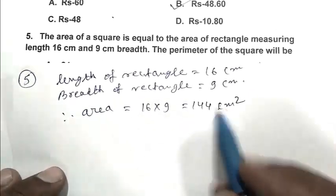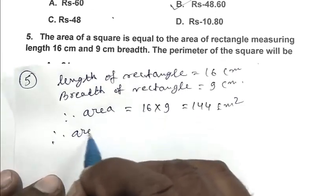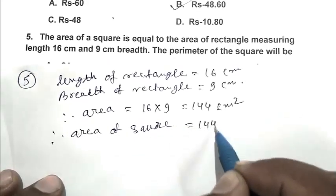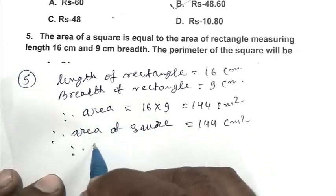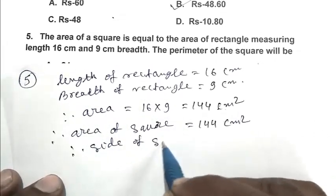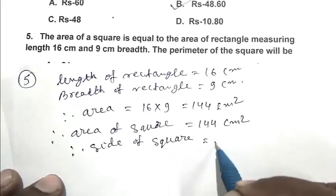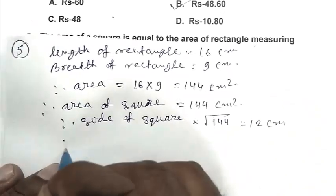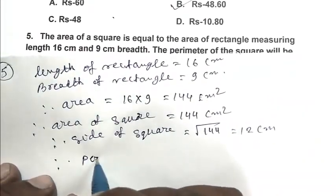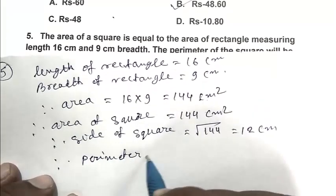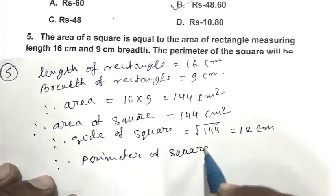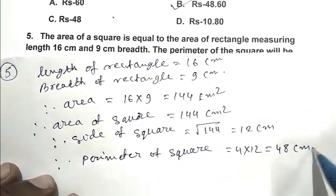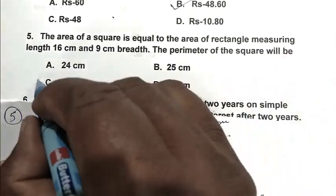This is also the area of a square. So area of square is 144 cm square. Therefore side of square is square root of 144, 12 cm. Therefore perimeter of square is 4 into 12, 48 cm. So C is the right answer.